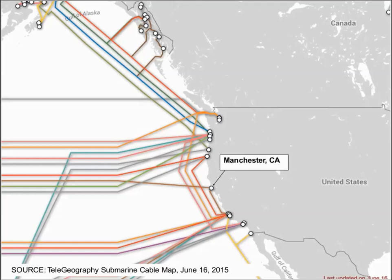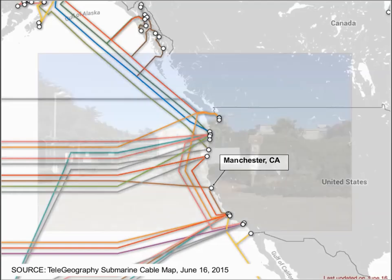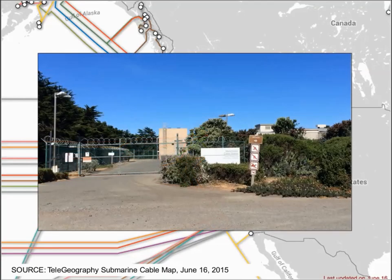This shows Manchester, California, and some of the sub-oceanic fiber optic cables that run to the West Coast. Worldwide, there are not too many cable landing stations. Here's a picture of the cable landing station — I was driving to the beach and ran across it. There's a sign to the beach, and right behind it is the Manchester cable landing station.